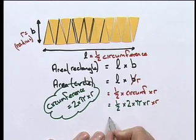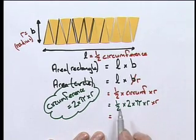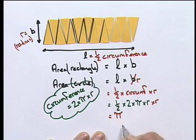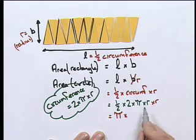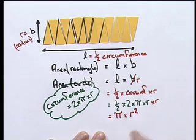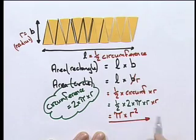And when I tidy all of that up, I'm going to get a half times 2 is 1, pi times radius times radius, which we abbreviate radius squared. Pretty cool, isn't it?